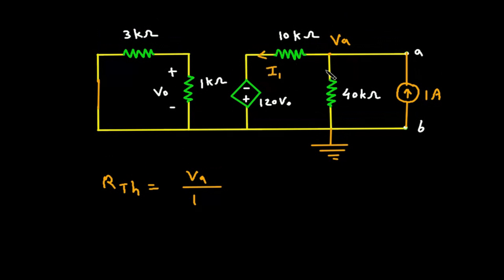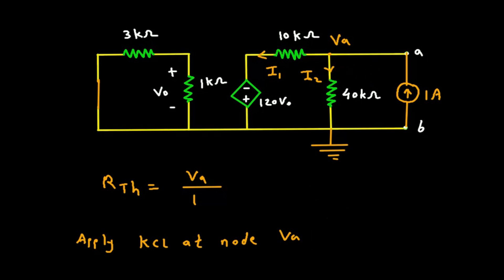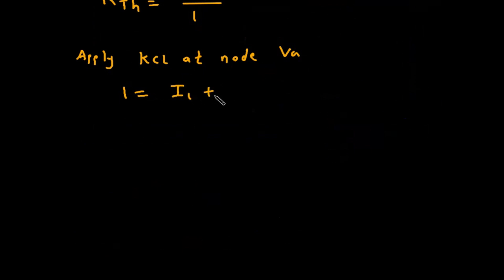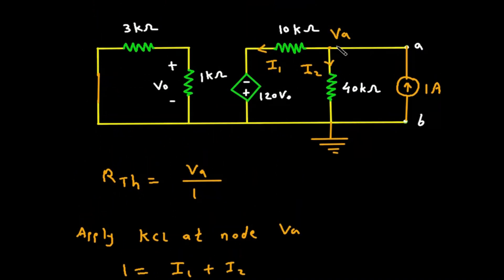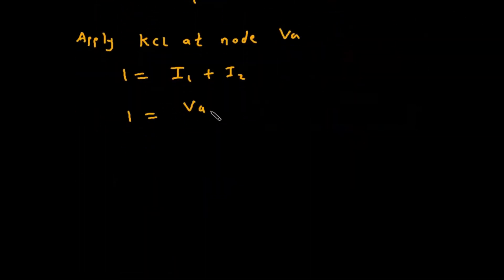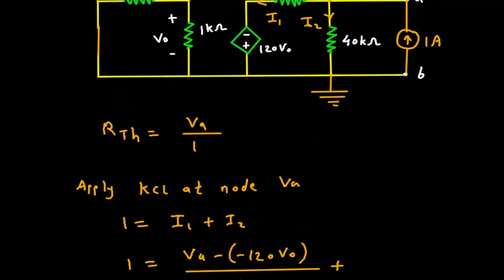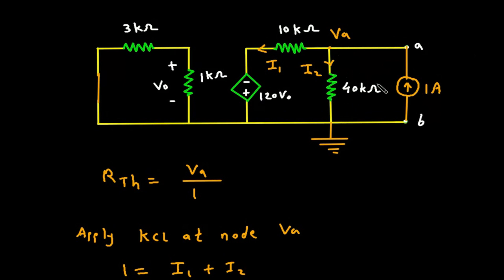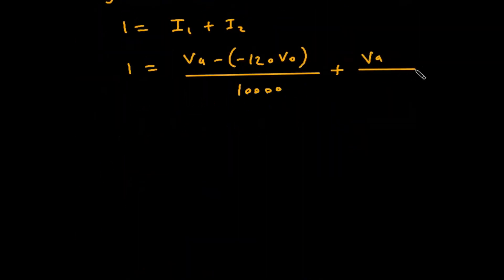Let's say this is current I1, and this is current I2. We will apply KCL at node VA. The summation of all the entering currents equals the summation of all the currents leaving the node. Entering current is 1A, so 1 equals I1 plus I2. I1 is VA minus (minus 120VO) divided by 10,000, because the polarity is opposite. I2 is VA minus 0 divided by 40,000.